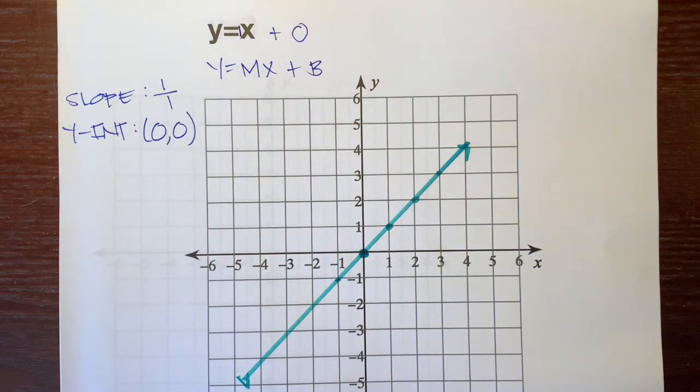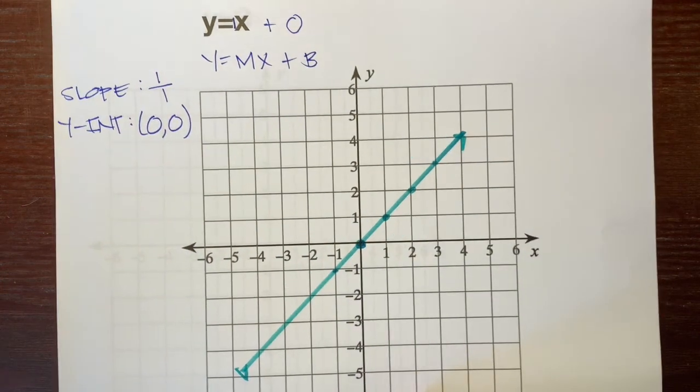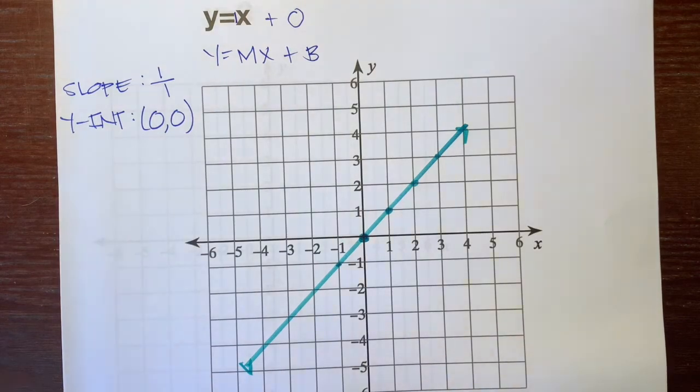That is how you graph a line using slope-intercept form. Hope it helps. Thanks.